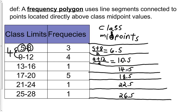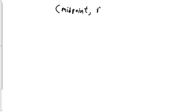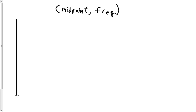Once we have the class midpoints, the next step is to put these into a graph with line segments. We're going to graph ordered pairs where the x-values are the class midpoints and the y-values are the frequencies. So we're graphing ordered pairs that look like: midpoint of the class, comma, frequency of the class. Let's go ahead and make our horizontal and vertical scales.